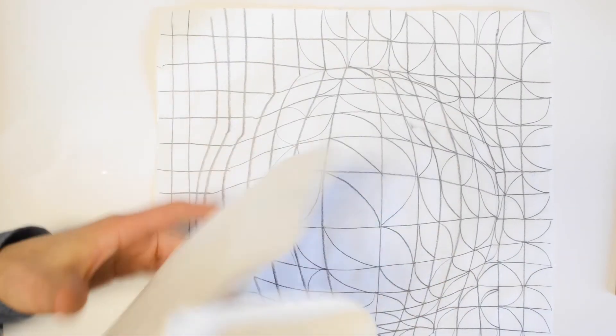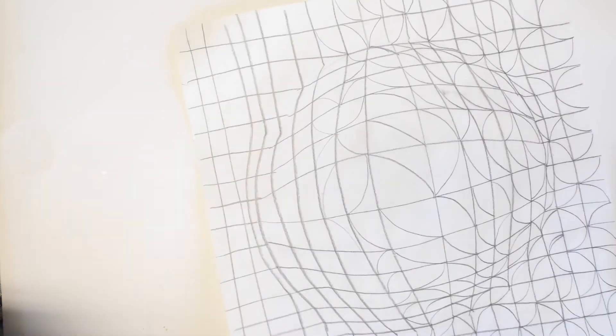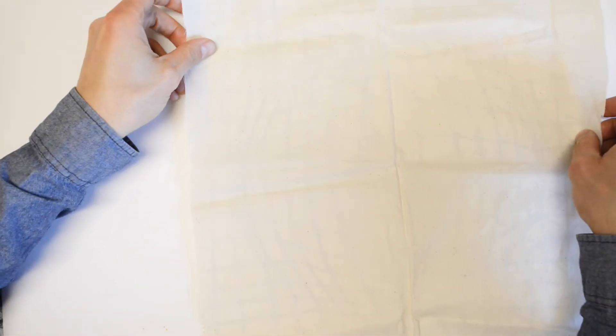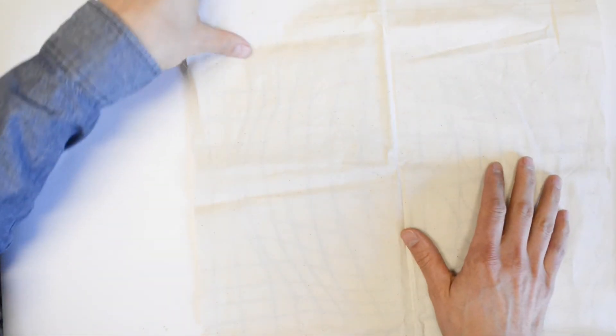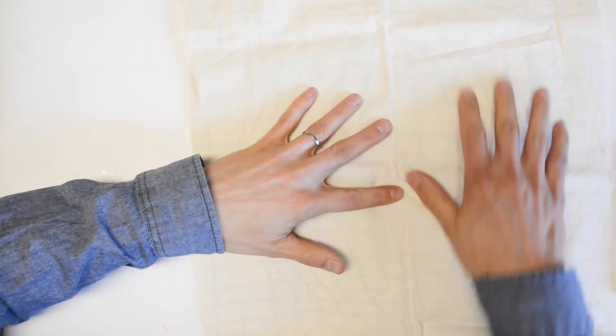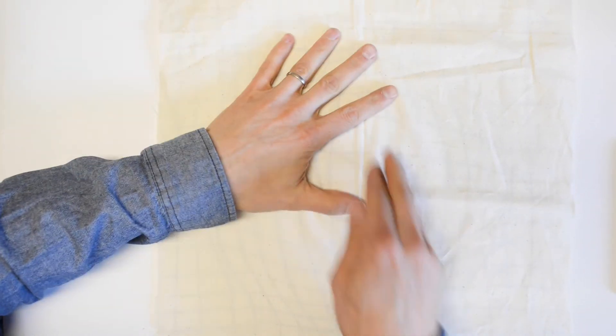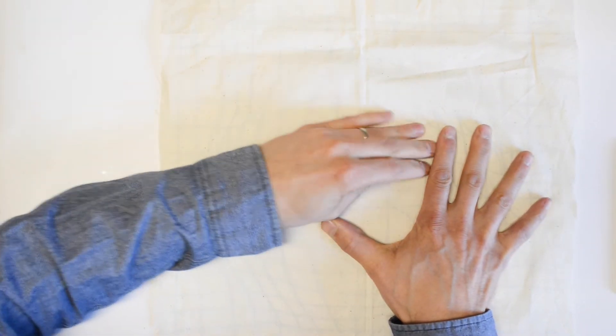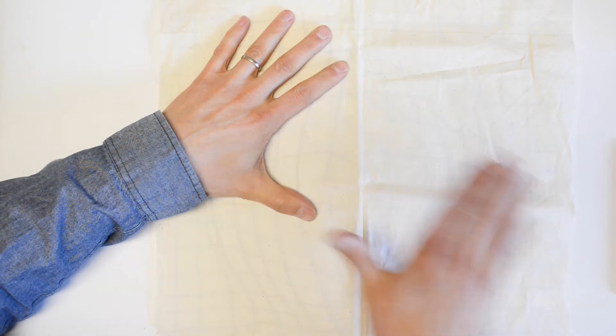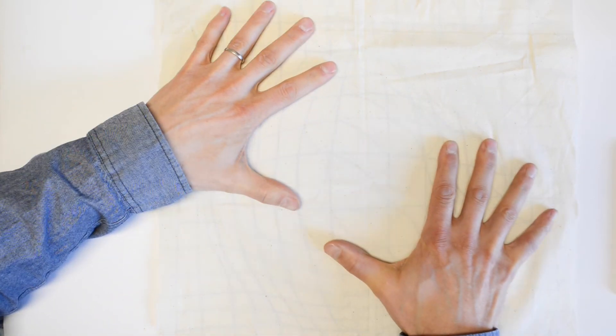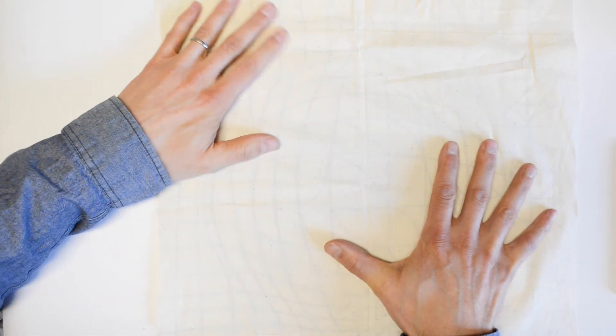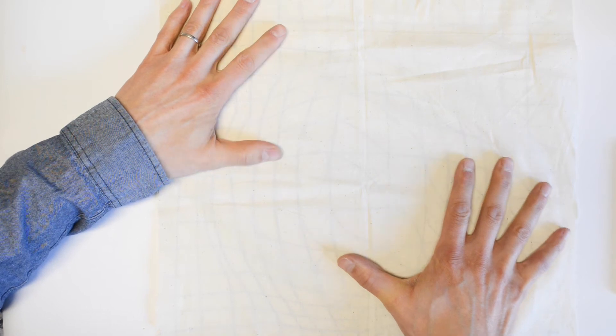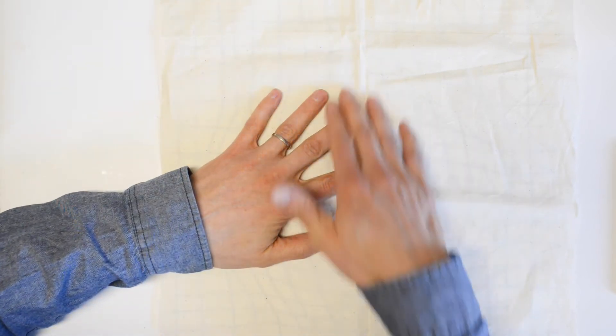And then the next process is to transfer this drawing onto our muslin. And how we do that is by laying our muslin over. If you've drawn a nice heavy line, which you see that I did here, with a dark pencil, I can see here my lines underneath and this could be taped down so that nothing's going to move.